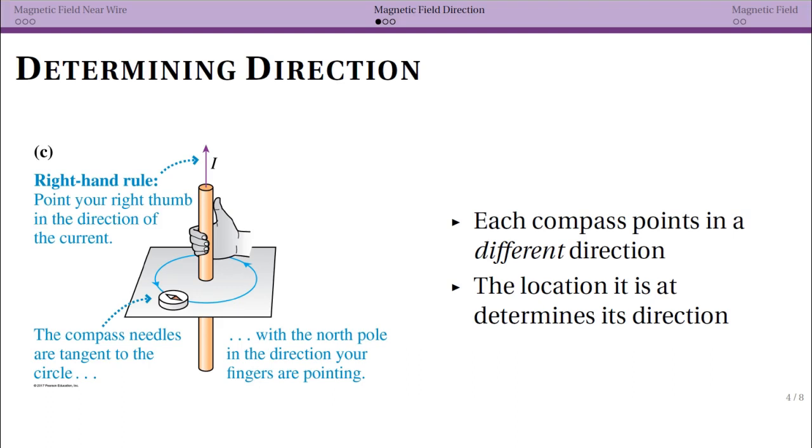We've said that all of our little compasses are going to form a circle around our wire-carrying current. One thing that we need to figure out is whether the circle is going in one direction or the other direction. We're always just going to call that clockwise versus counterclockwise.